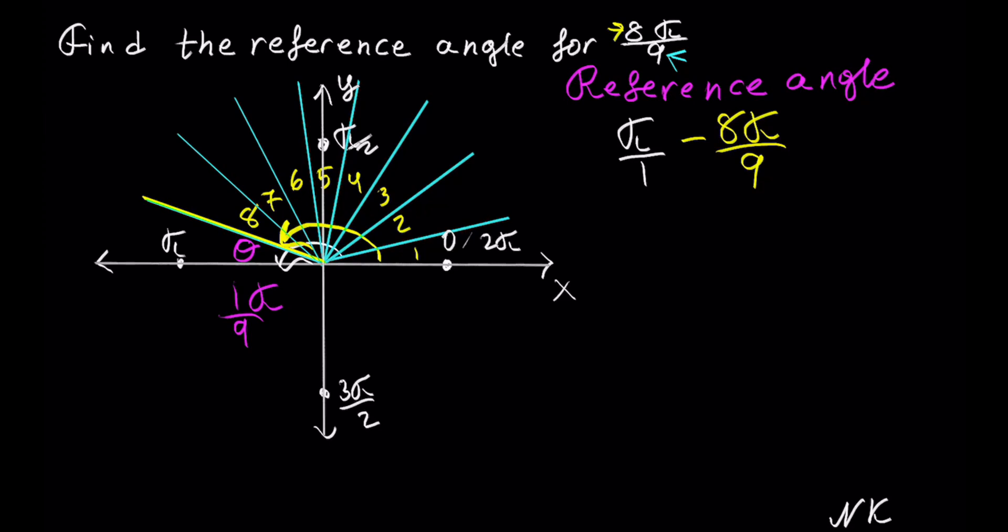So if you multiply 1 by 9, we get 9. Whatever we do to the denominator, we need to do the same thing to the numerator. Now we get 9 times π is 9π out of 9 minus 8π out of 9.